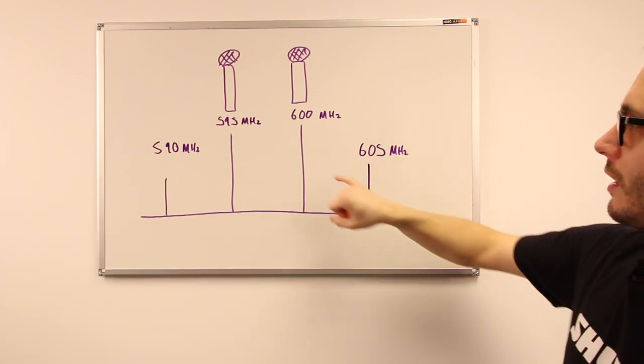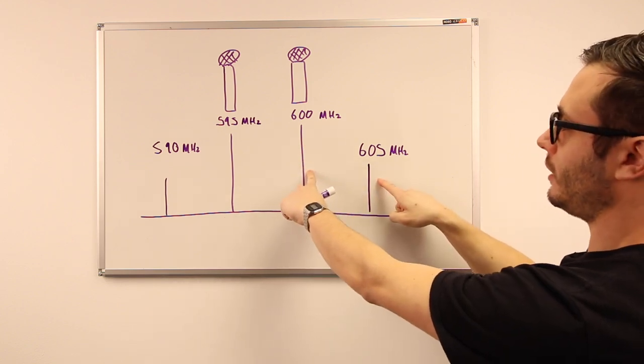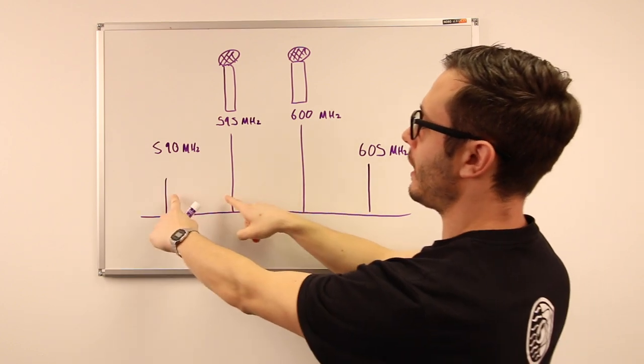Notice that the distance between frequency two and the intermodulation is the same as the distance between the two primary transmissions, and there as well.